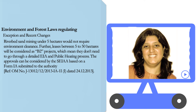The second exception and recent change refers to riverbed sand mining under 5 hectares. Through an office memorandum, it is mentioned that all leases between 5 and 50 hectares will be considered as Category B2 projects. This is important because all Category B projects approved and appraised at the state level can be categorized as either B1 or B2, depending on whether or not they require an environmental clearance, environment impact assessment, and public hearing. Category B1 projects need to go through an EIA and public hearing; B2 projects are exempt.